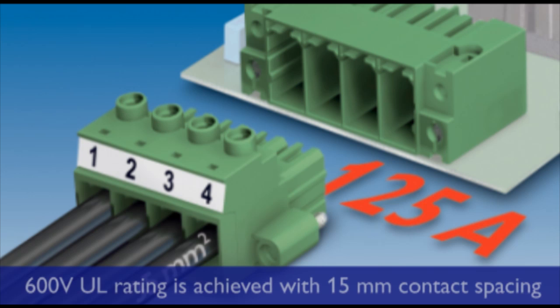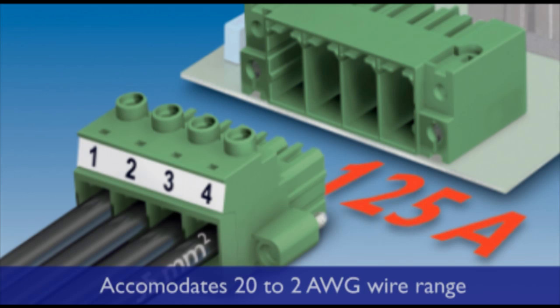A 600 volt UL rating is achieved with the 15 millimeter contact spacing. The PC35 will accommodate a wire range of 20 to 2 AWG.